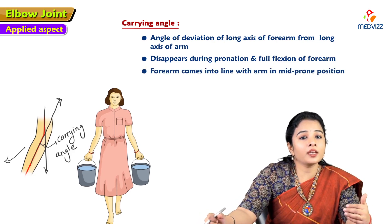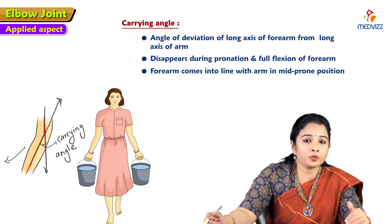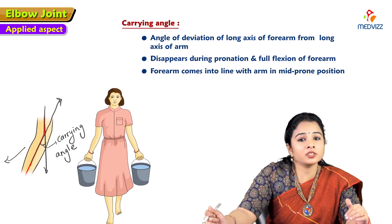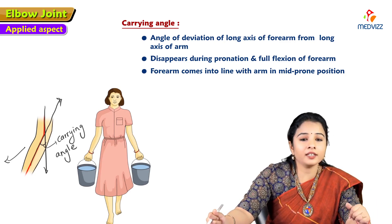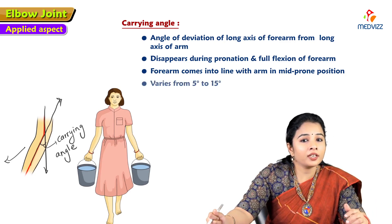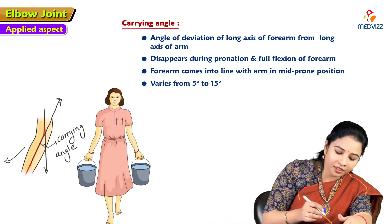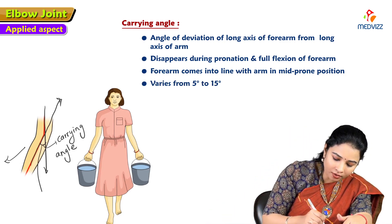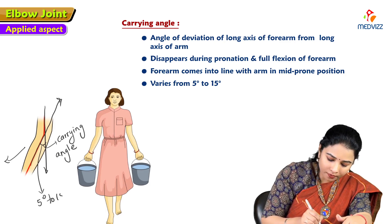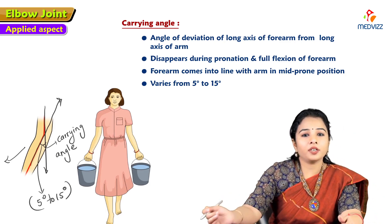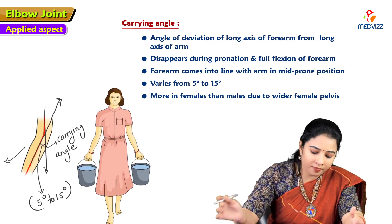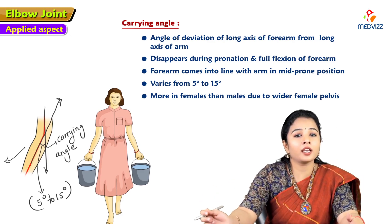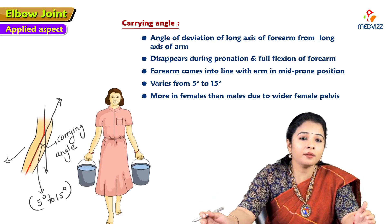The forearm comes into line with the arm in the mid-prone position, which is the position in which the hand is mostly used. The carrying angle varies from 5 to 15 degrees and is more prominent in females than in males due to the wider female pelvis.